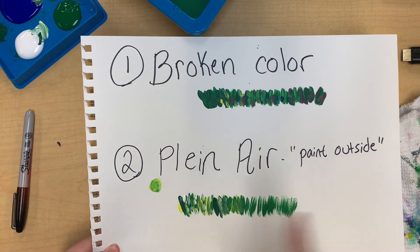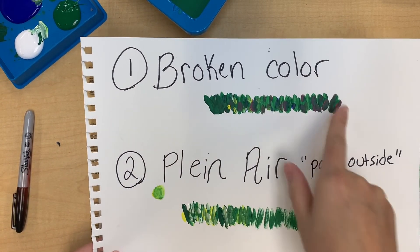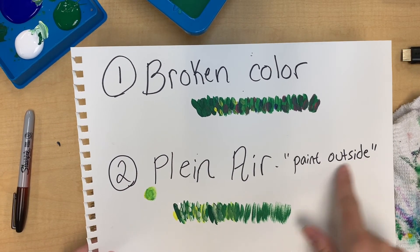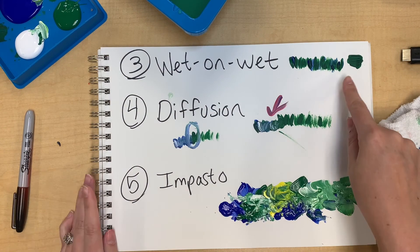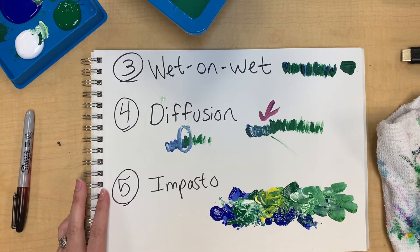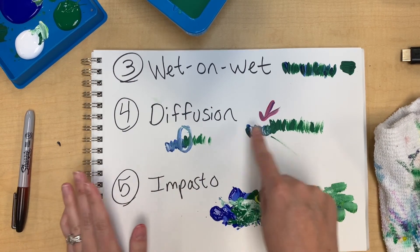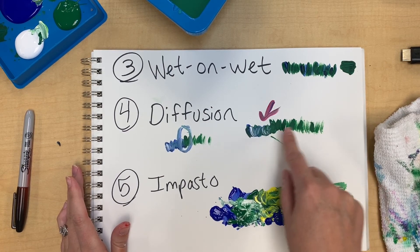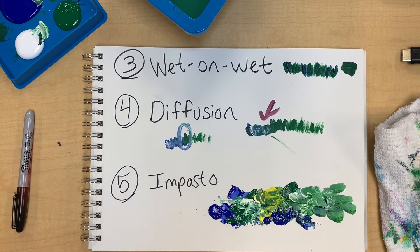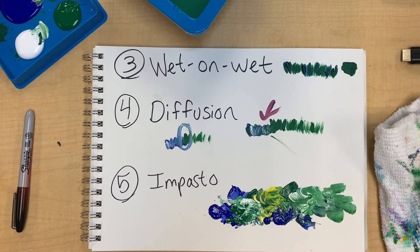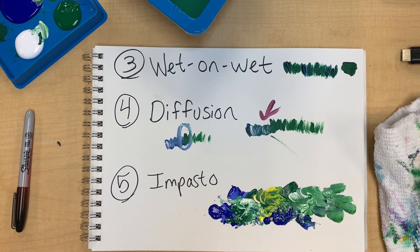Quick review of our five techniques: broken color — that unexpected pop of color; plein air — painting outside and looking for the light; wet on wet — painting while your first layer is still wet before it dries; diffusion — when one element of the piece meets another with a gradual blend and no hard edges; and impasto — the building up and layering of brush strokes, leaving them as is on the paper or canvas. I hope you learned some new techniques today and can apply them to your next piece.